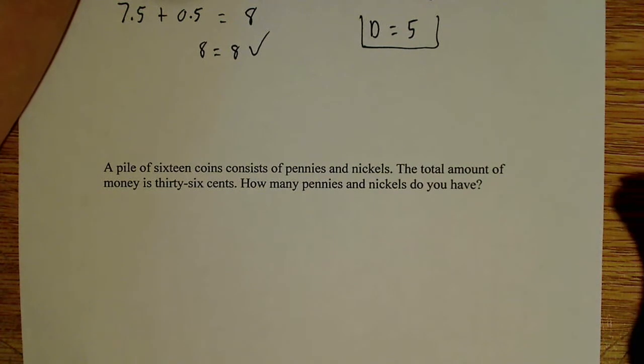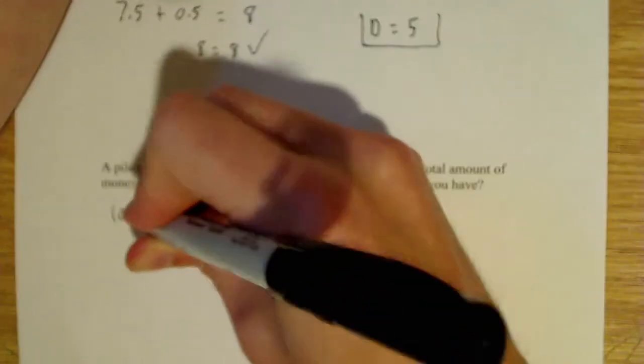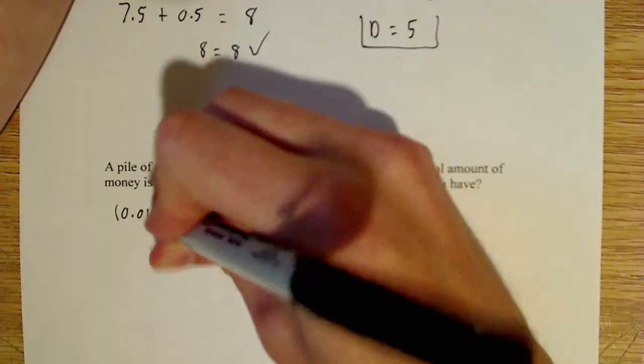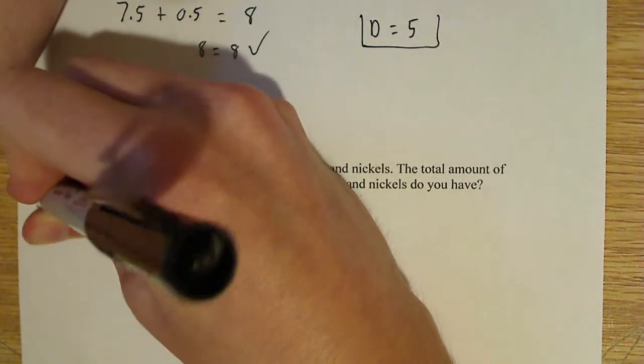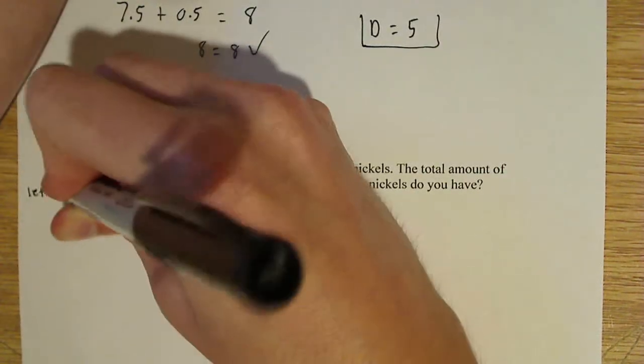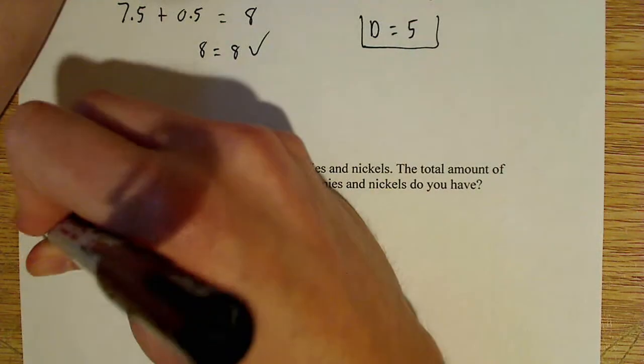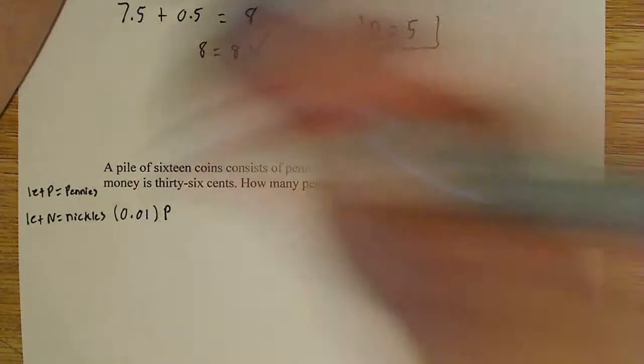So that gives me one equation right there if I think about it. Because I know each penny is equal to 0.01 cents, and that's going to be times P. So maybe I should first say, let P equal the pennies. So let P equal the pennies, and let N equal nickels.